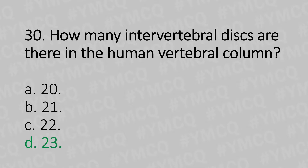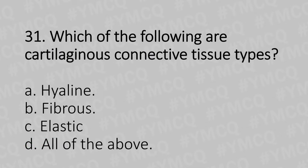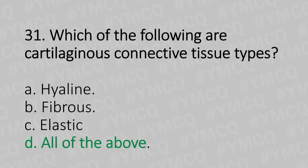Moving to our 31st question. Which of the following are the cartilaginous connective tissue types? Option A: Hyaline. Option B: Fibrous. Option C: Elastic. Option D: All of the above. And the answer is Option D: All of the above.